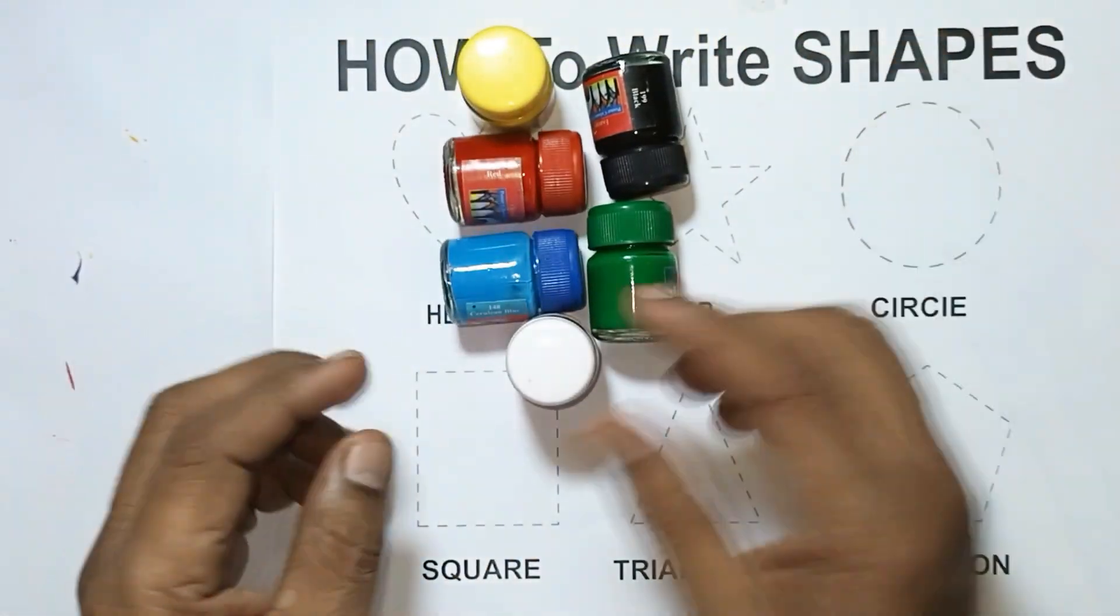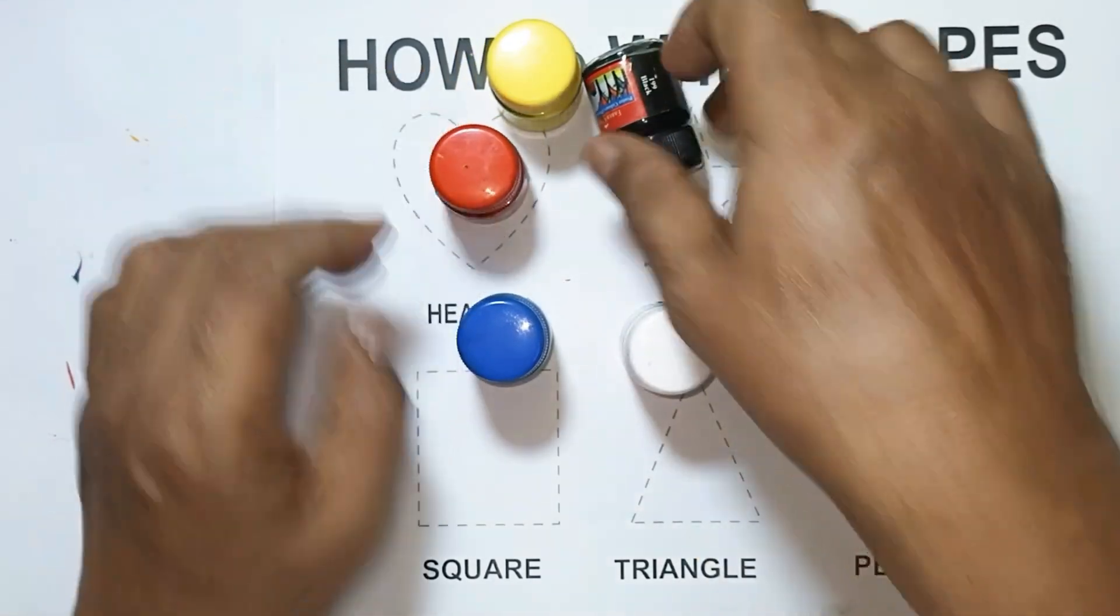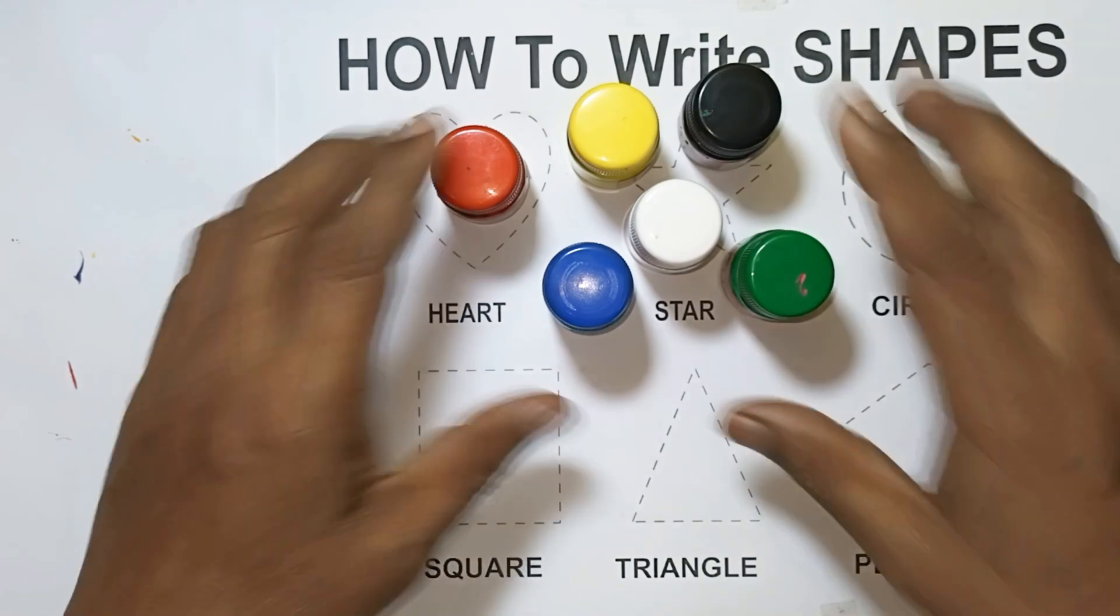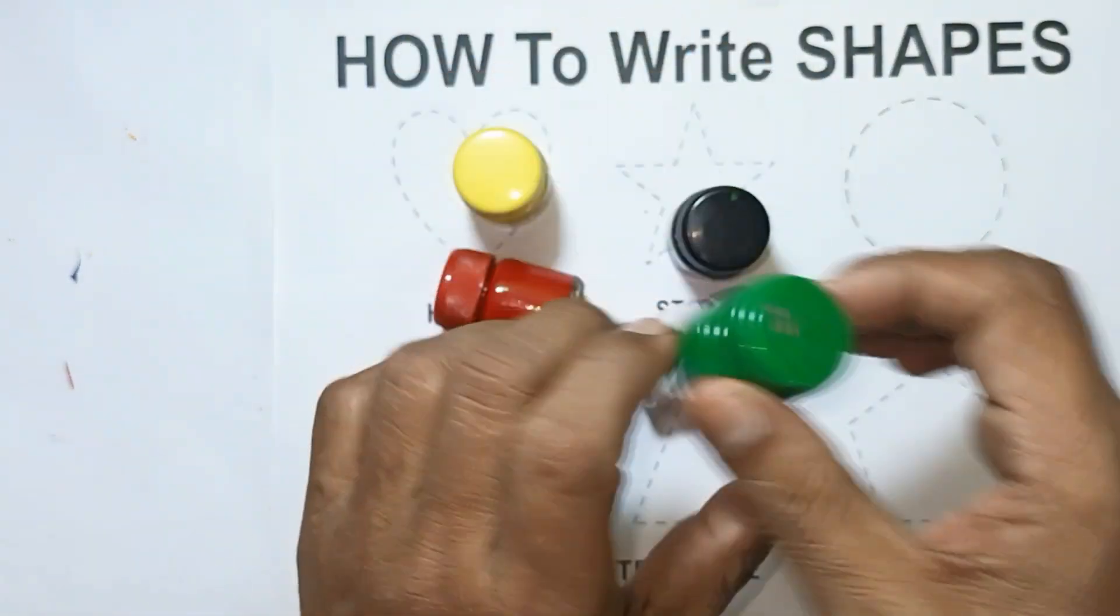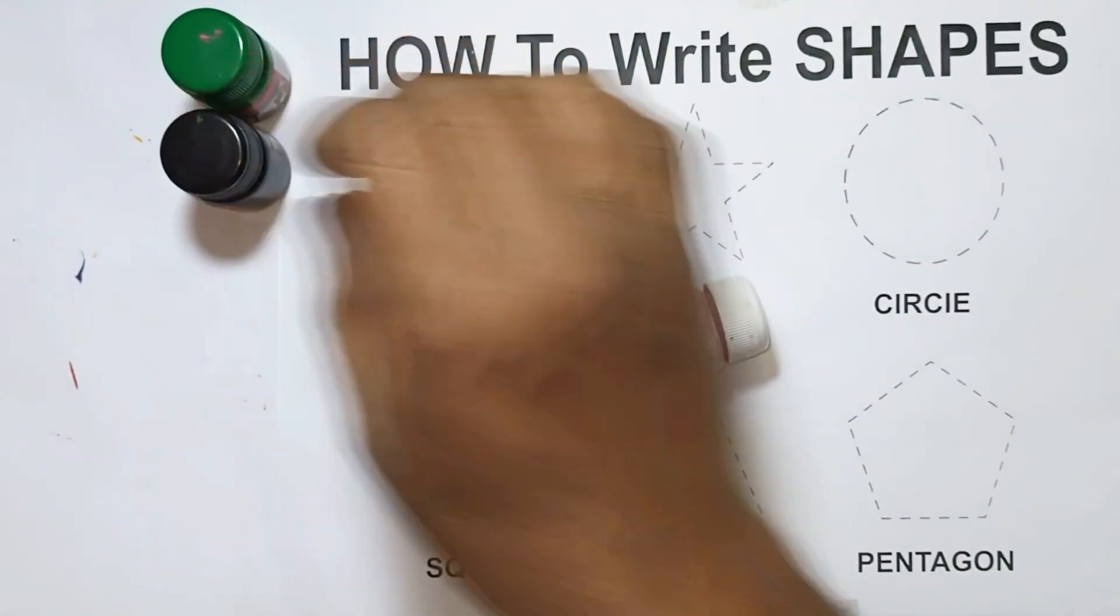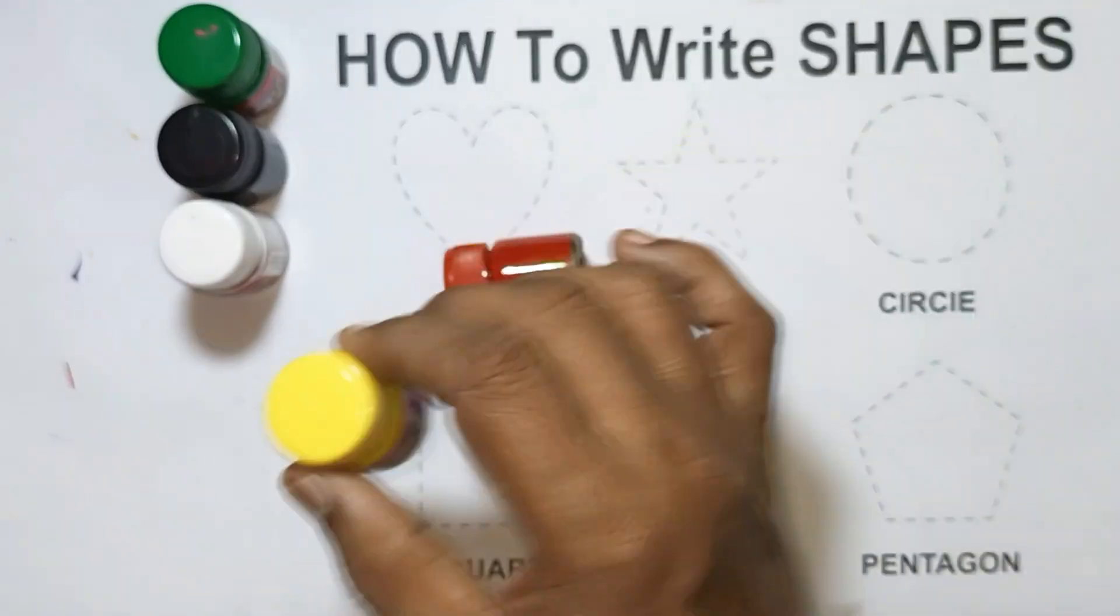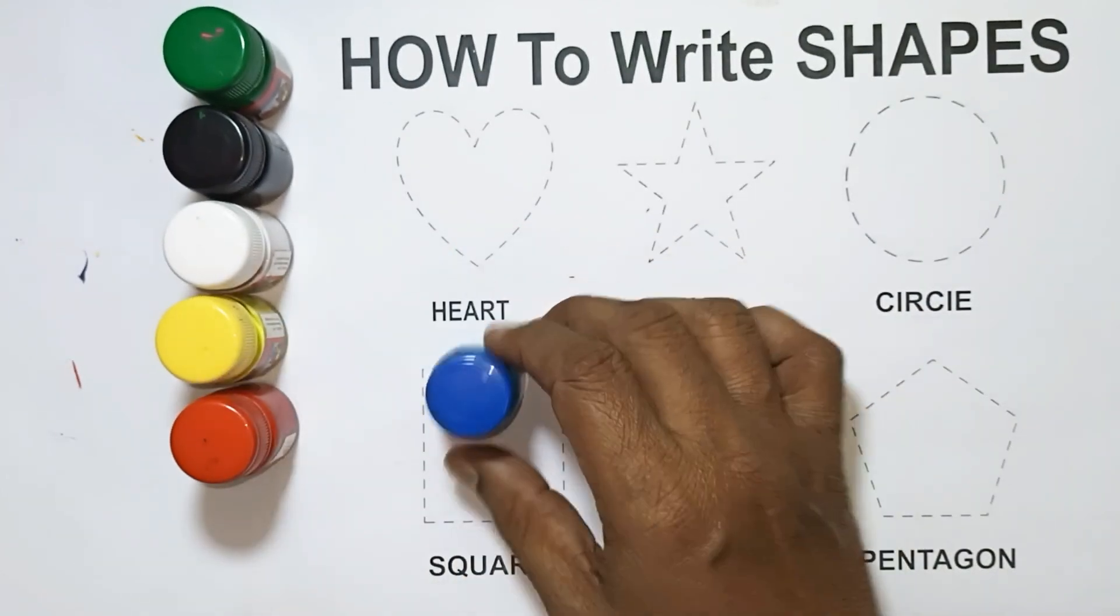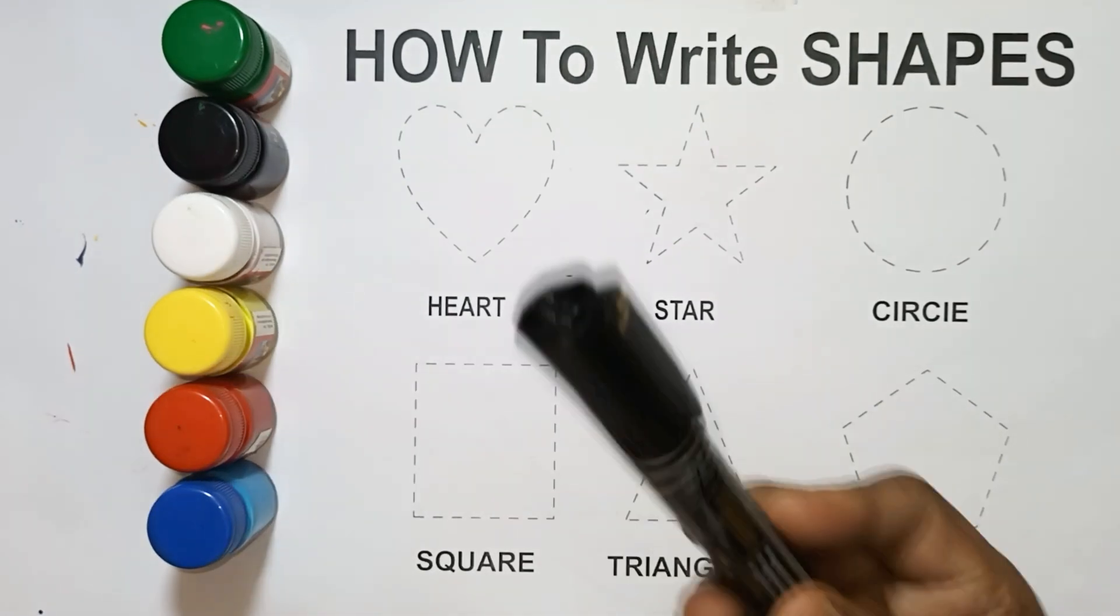Hi kids, welcome to my channel. Colors: red color, green color, blue color, pink color, yellow color, red color, blue color. How to write shapes.